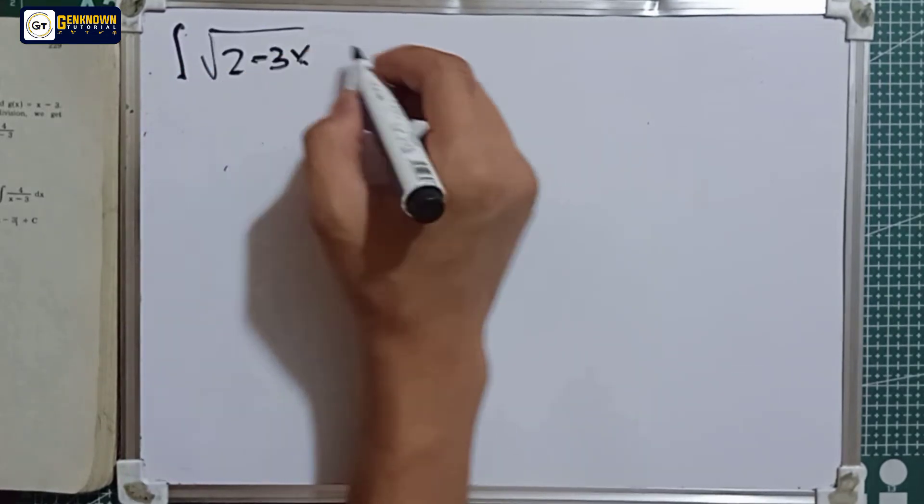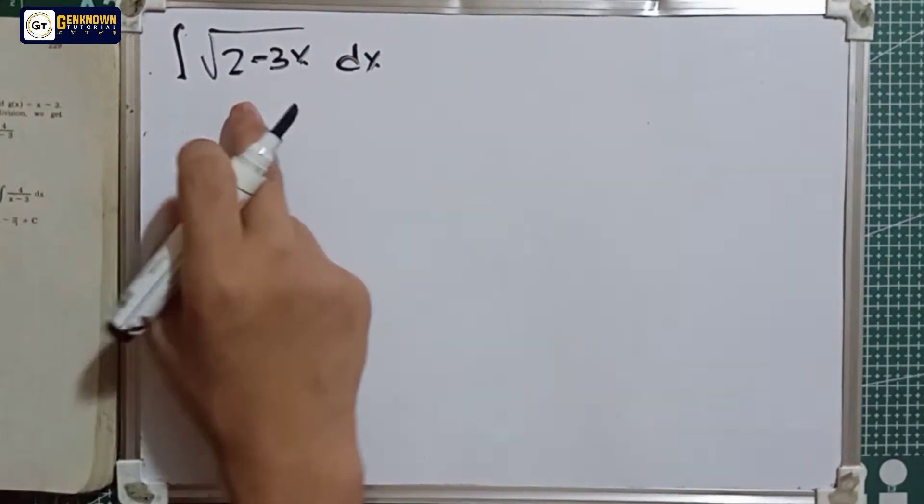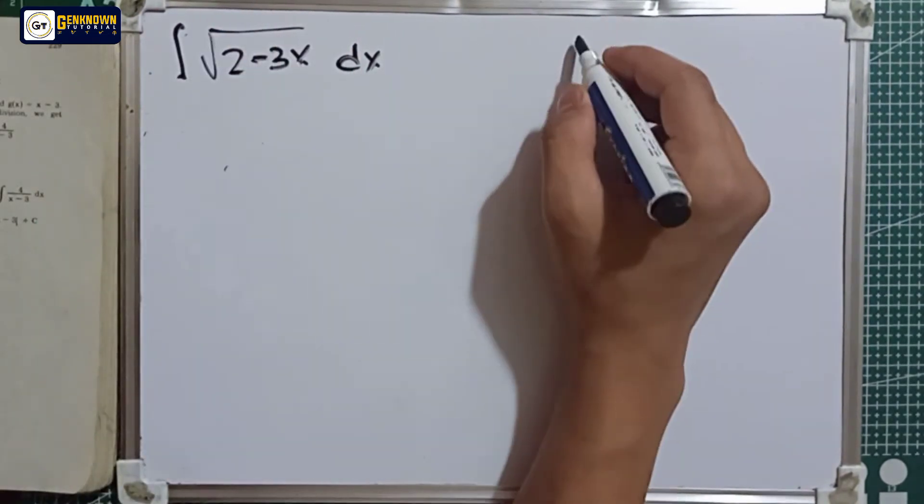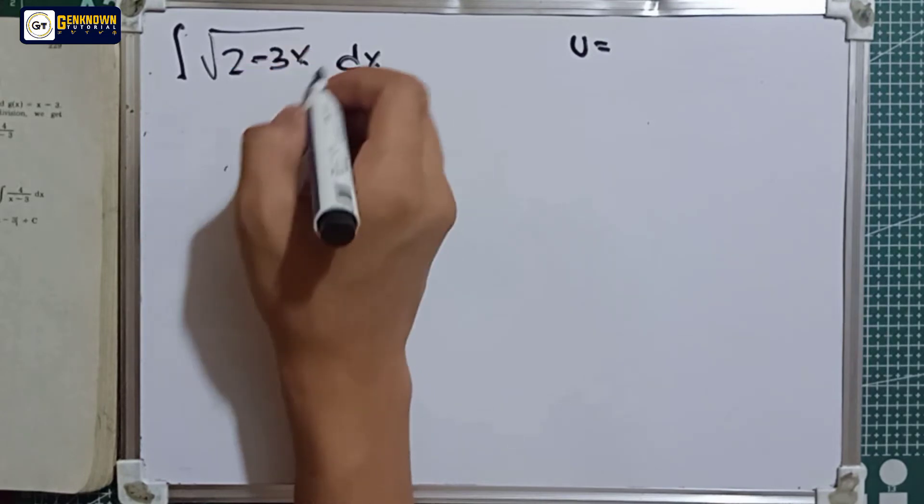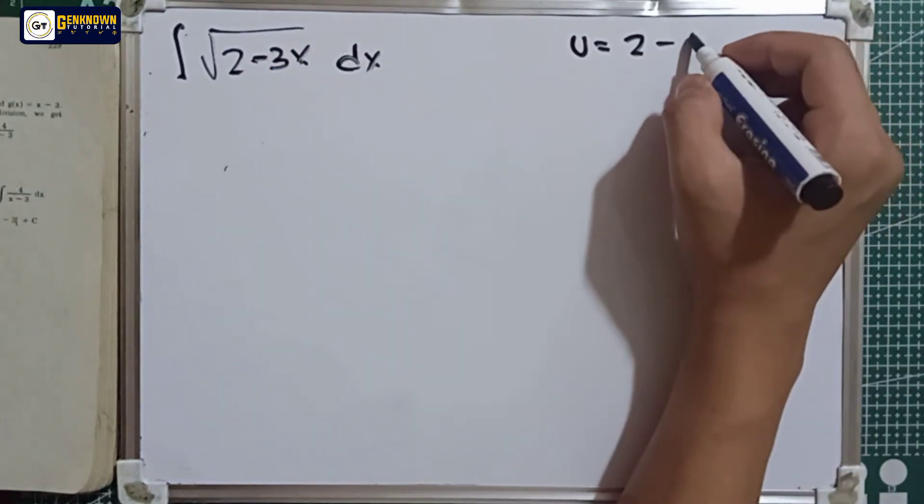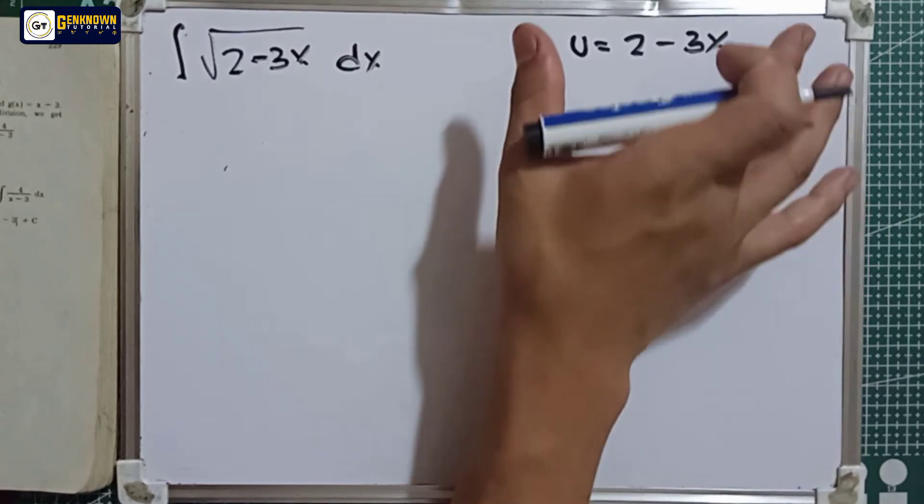Let the radicand equal to u, so the radicand is 2 minus 3x. Then derive du.